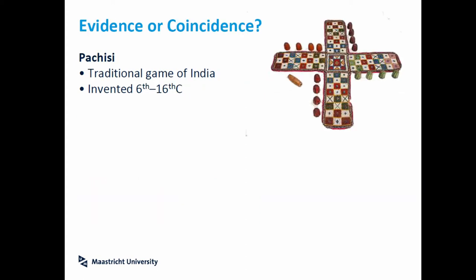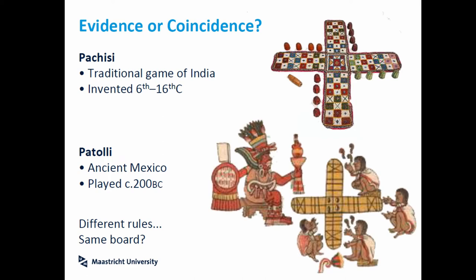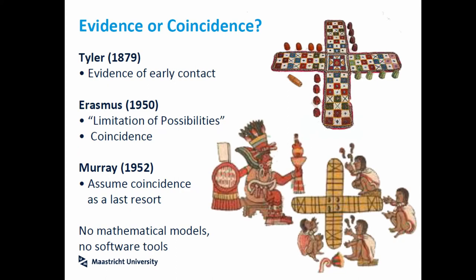This is an example of a possible cultural contact. In India, we know a game called Pachisi, and in ancient Mexico, another game called Patolli. If you look, the boards are really, really similar — a cross board with special crosses at each extremity. But the rules are different. According to different research, one study explains it as evidence of early contact between India and ancient Mexico. Another study says it's just a coincidence. Unfortunately, we are not sure if that game is a proof of cultural contact, and none of those studies use any mathematical models or filter tools to prove it.